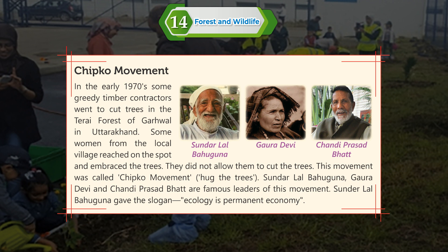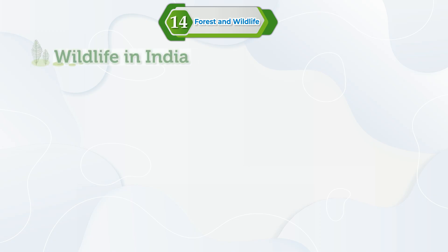Chipko movement: In the early 1970s, some greedy timber contractors went to cut trees in the Terai forest of Gadwal in Uttarakhand. Some women from the local village reached the spot and embraced the trees, not allowing them to be cut. This movement was called the Chipko movement, which means 'hug the trees.' Sundarlal Bahuguna, Gaura Devi, and Chandi Prasad Bhatt are famous leaders of this movement. Sundarlal Bahuguna gave the slogan: 'Ecology is permanent economy.'